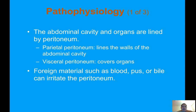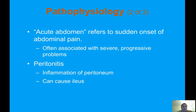Pathophysiology: the abdominal cavity and organs are lined by a peritoneum. The parietal peritoneum lines the walls of the abdominal cavity, while the visceral peritoneum covers organs. Foreign materials such as blood, pus, or bile can irritate the peritoneum. Acute abdomen refers to sudden onset of abdominal pain, often associated with severe progressive problems. Peritonitis — inflammation of the peritoneum — can cause ileus.